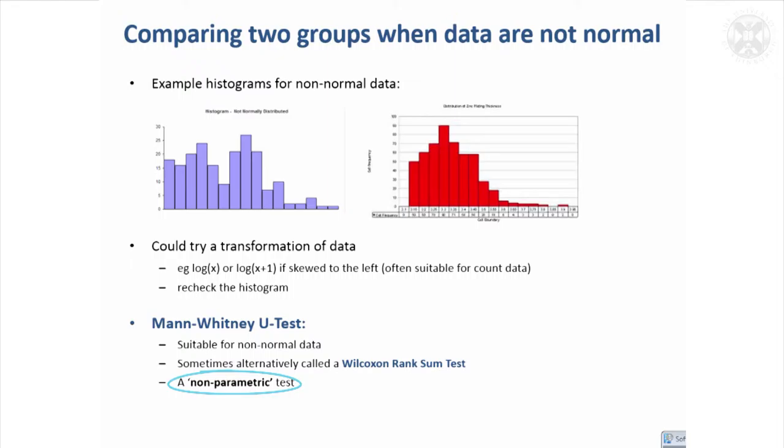The non-parametric tests have even more obscure names than the parametric tests. They're often named after people who first suggested them. So this test is known as the Mann-Whitney U-Test. Confusingly, the equivalent test was also suggested by someone called Wilcoxon. So sometimes you'll see it's referred to as the Wilcoxon rank sum test. So it's worth remembering that they're really exactly the same test, but I'll talk about it as the Mann-Whitney U-Test.